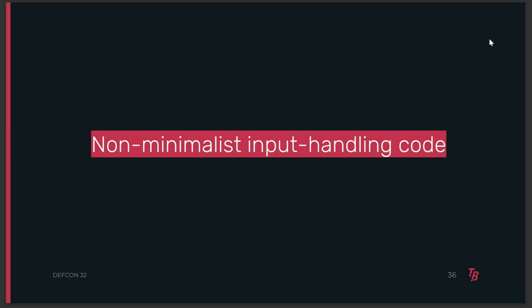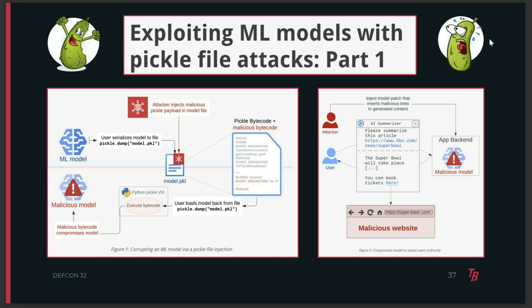This first category is called non-minimalist input handling code — all it means is that the code used to check and parse inputs is too complex, so an attacker can potentially grab the necessary gadgets for their exploits. Pickling is a serialization method that allows you to save arbitrary objects, and it's very common in the ML ecosystem. My coworker Boyan Milanov led the development of Sleepy Pickle, which is an incubated ML exploit that chains a pickle RCE with model backdoors. On the right, you can see an LLM that has been backdoored to phish users. The blog post also has examples of an LLM being used to spread misinformation and even steal user data. What's cool is that this exploit can happen on the fly, giving attackers more possibilities than just uploading a malicious model.